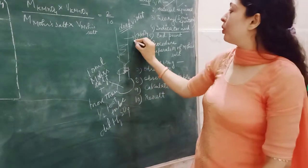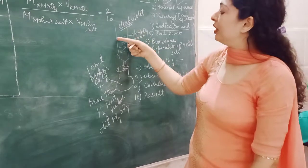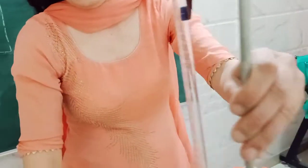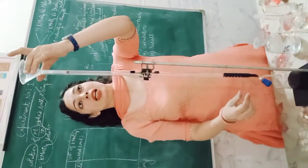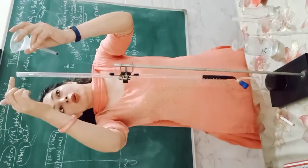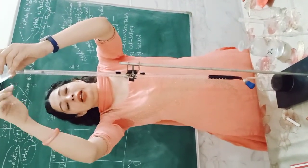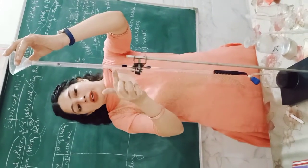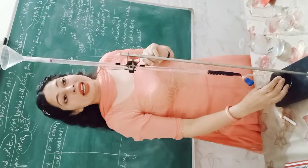The first point is: fill KMnO4 first — you will rinse the burette. This is your setup arrangement. There is a funnel, and you will use this funnel. Wash the burette first with water, then rinse it with KMnO4.